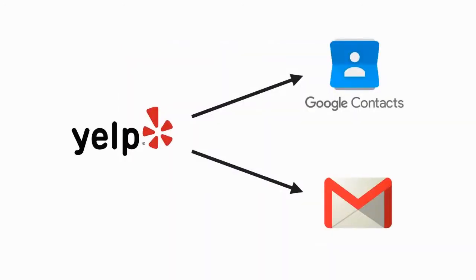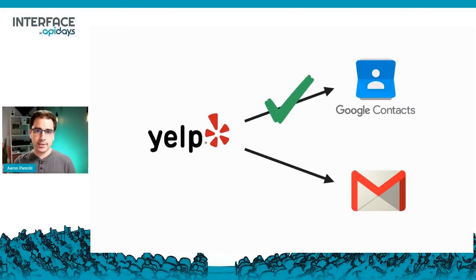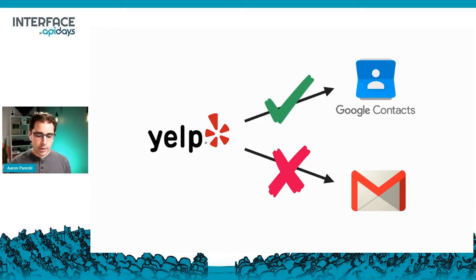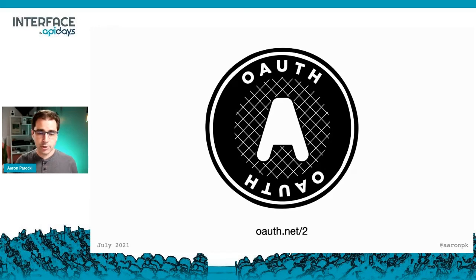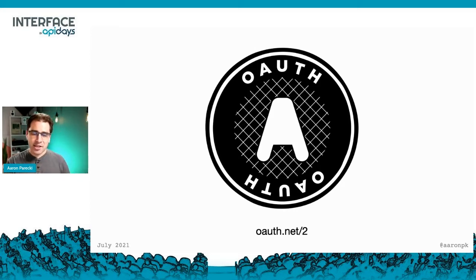In the third-party app use case, we'd like a solution that lets apps like Yelp get access to data they want while preventing access to other parts of the account they don't need. That's really the problem statement OAuth was created to solve: how do we let apps access data without sharing passwords? This applies to both first-party and third-party apps — in the third-party case, the app never needs to touch the user's password, and in the first-party case, we can better integrate MFA and avoid complicated phishing rules.